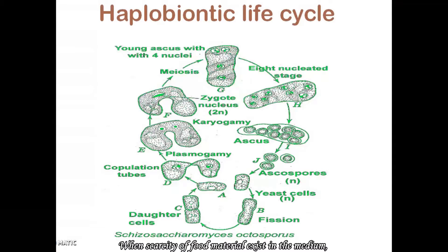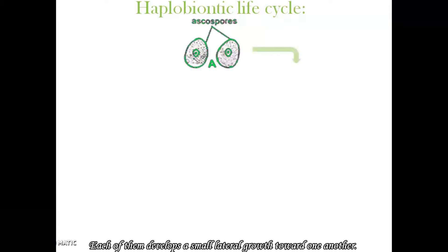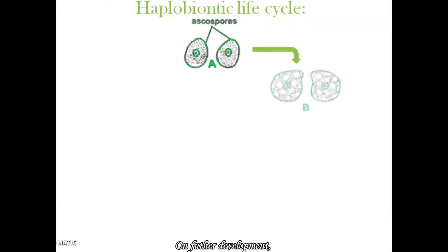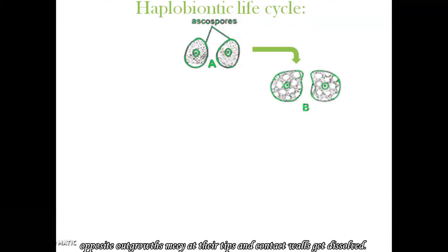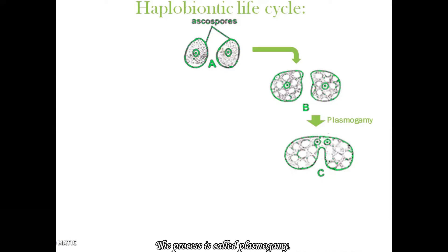When scarcity of food material exists in the medium, two yeast cells come close to each other and lie side by side. Each of them develops a small lateral outgrowth toward one another. On further development, the opposite outgrowths meet at their tips and the contact walls get dissolved. As a result, the cytoplasm of both cells fuse to form a dikaryotic cell (N+N). This process is called plasmogamy.